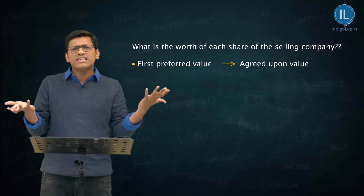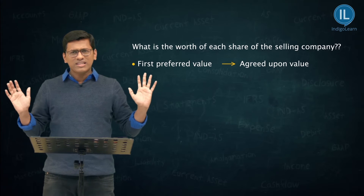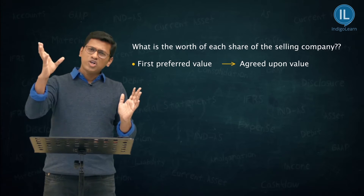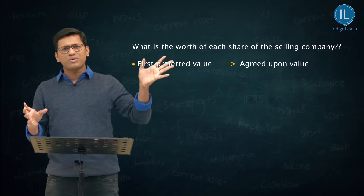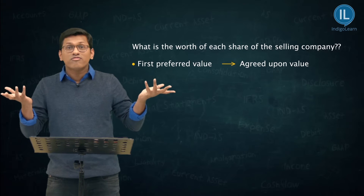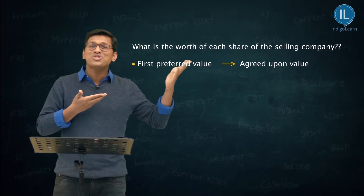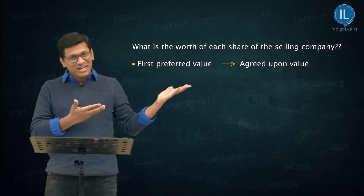Something like A and B discuss and say, forget about everything — A's share value is 100 rupees, B's share value is 70 rupees. A and B agree upon that. That's the most preferred value we have to consider.